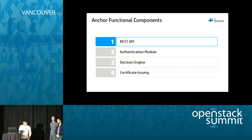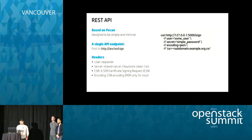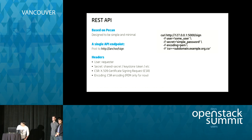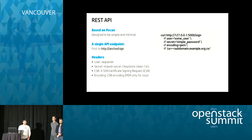Anchor breaks down into four main functional blocks: a REST API, an authentication system, the decision engine, and the certificate issuing system. The REST API is built on PECAN and is very simple — we actually only have a single endpoint: slash sign. A request has four basic fields: a user field, a secret field used by the authentication module, the CSR as an X.509 certificate signing request, and a field indicating the encoding. We only support PEM at the moment.